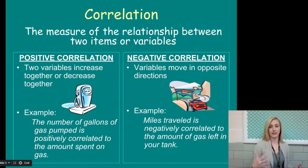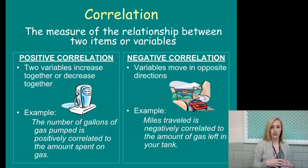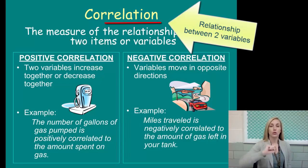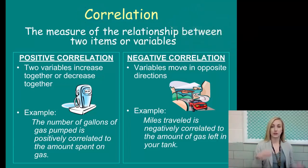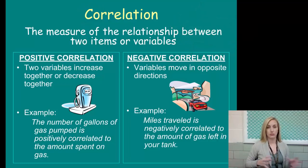So first, let's talk about correlations, the measure of the relationship between two items or variables. Notice in the word correlation the name relation. I want you to write it down again or highlight on your paper that a correlation is a relationship between two variables, hence co, being two, or between two items. There's two types of correlations, positive and negative, and it's all about which way the two variables go.